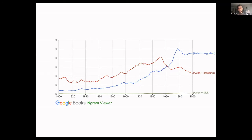Molt has really been understudied as far as avian life history characteristics go. If we look at the three main things birds do in a year — migrate, breed, and molt — migration and breeding have received quite a bit of attention, but molt has received almost none. Maybe a quarter to a third of bird species actually migrate, and not every bird breeds every year. Birds can skip breeding and skip migration, but birds really don't ever skip molt. So it's really important, and it's a fairly understudied subject.